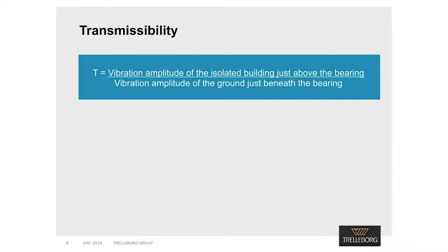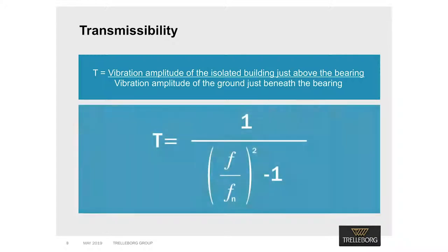The dimensionless term transmissibility is used to define the level of attenuation or reduction of the disturbing vibration amplitude passing into the structure. The transmissibility T equals the vibration amplitude of the isolated building just above the bearing divided by the vibration amplitude of the ground just beneath the bearing. For a perfectly linear elastic spring without any damping, the expression for T involves F, the lowest dominant disturbing frequency of the ground-borne vibration, and Fn, the natural frequency of the bearing.